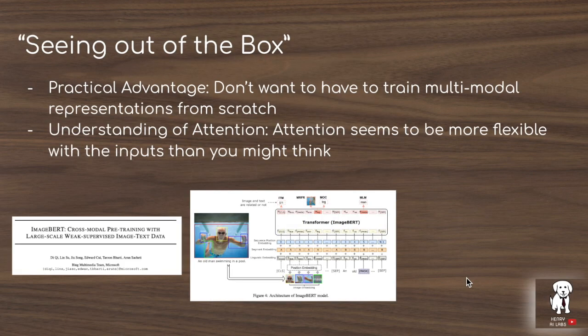The idea of BERT 'seeing out of the box' describes how much fine-tuning of a non-text modality's embedding you need in order to attend over the entire sequence. When you add regions of interest from ImageBERT into a pre-trained BERT model, how well can it already attend to these visual embeddings? This is practically advantageous if you're building a vision-language model and don't want to train representations from scratch given limited computational resources.